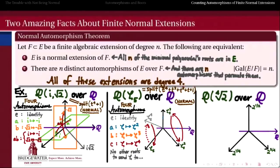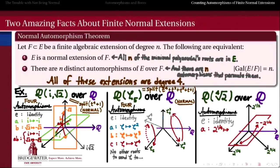What are the automorphisms of this field over Q? We always have the identity, and beyond that we need to know where else we can send 2^(1/4). That number by itself generates the other basis elements over Q, so as soon as we decide where to send the fourth root of 2, we've determined an automorphism over Q. Because of the conjugate roots theorem, we have to send 2^(1/4) to another root of its minimal polynomial, namely t⁴ − 2. The only other option is to send it to its own opposite, minus 2^(1/4), since that is also a root of t⁴ − 2.